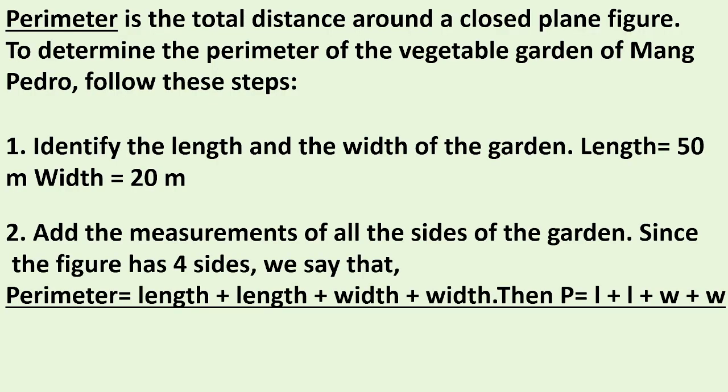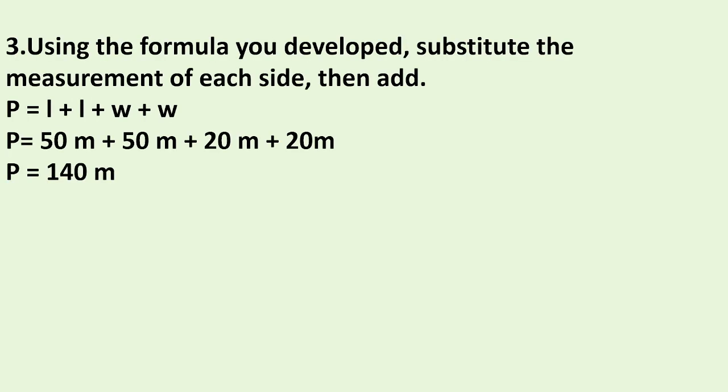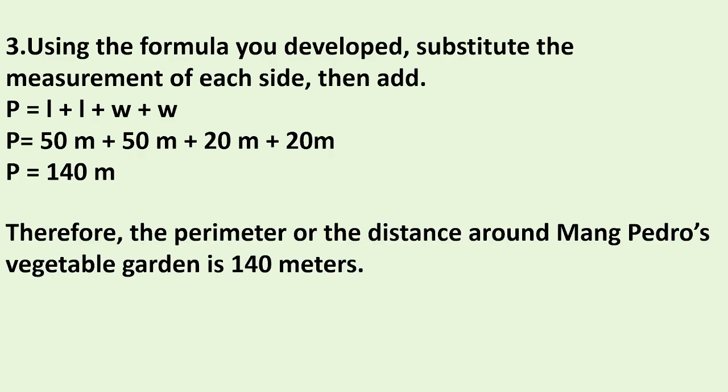Add the measurements of all the sides of the garden. Since the figure has four sides, perimeter equals length plus length plus width plus width. Substituting: Perimeter equals 50 meters plus 50 meters plus 20 meters plus 20 meters. Perimeter equals 140 meters. Therefore, the perimeter or the total distance around Mang Pedro's vegetable garden is 140 meters.